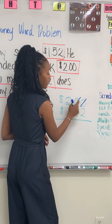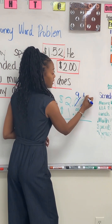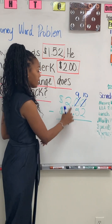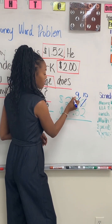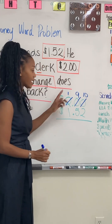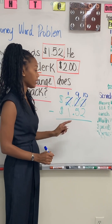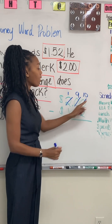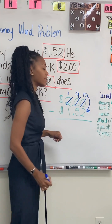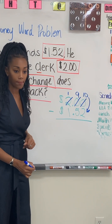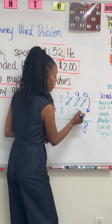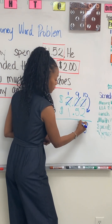This zero right here turns into a nine. This one turns into a ten. To get my nine here, I have to borrow from my hundreds place and give ten tens over here. Now we have ten minus two — that's eight. Nine minus five — that's four.